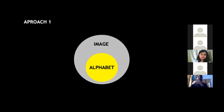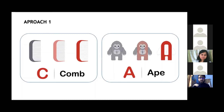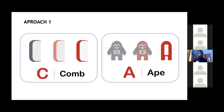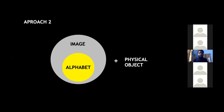With our first approach, we embedded the alphabet within the image. For example, 'C for comb' — within the structure of a comb, there is a 'C' formation. Similarly, within the structure of another object, an 'A' formation is embedded.